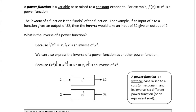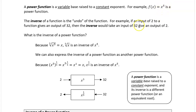I also want you to understand the difference between a power function and an exponential function — they're not the same thing. A power function is a variable base raised to a constant power, a constant exponent. For example, f(x) = x to the fifth. The five stays constant; the variable is the base. We have a variable base raised to a constant power.